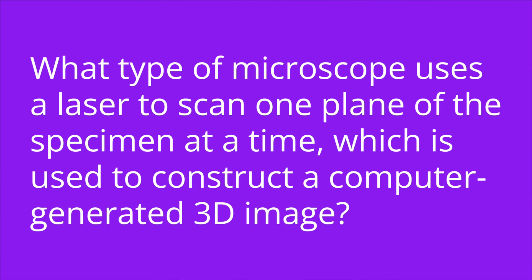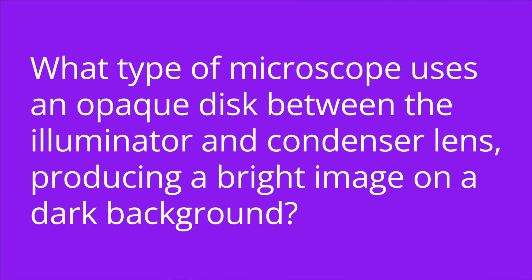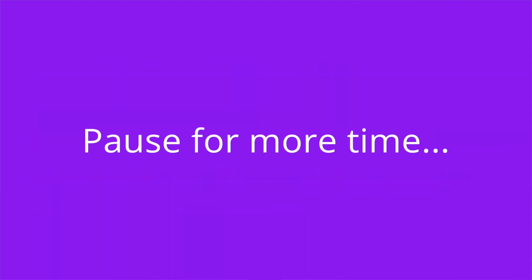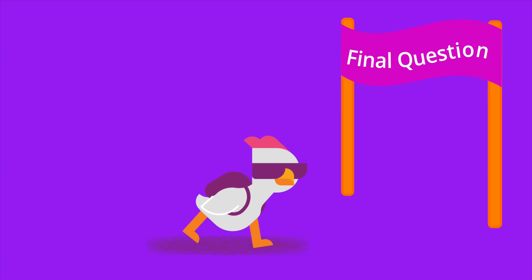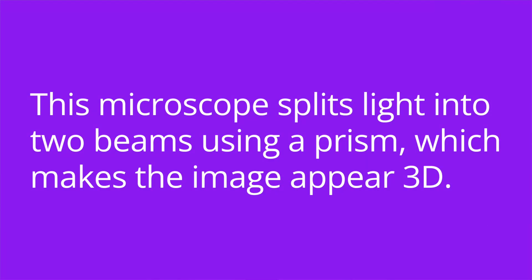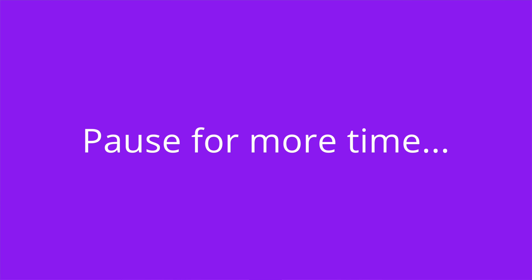It's quiz time — name that microscope. Number one: what type of microscope uses a laser to scan one plane of the specimen at a time, which is used to construct a computer-generated 3D image? The answer is a confocal microscope. Number two: what type of microscope uses an opaque disk between the illuminator and condenser lens, producing a bright image on a dark background? The answer is a darkfield microscope. Number three: this microscope splits light into two beams using a prism, which makes the image appear 3D. The answer is a differential interference contrast, or DIC, microscope.